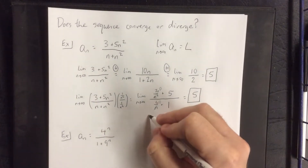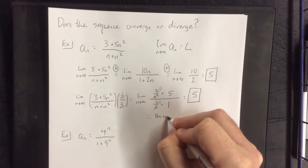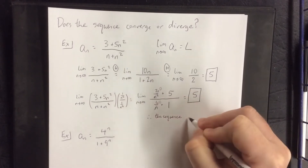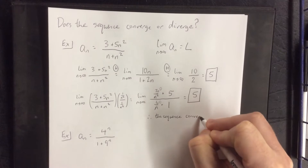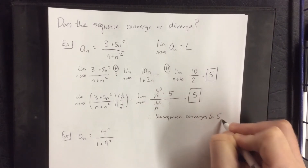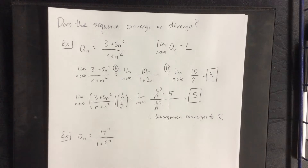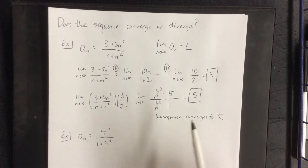So what we can say is the sequence converges to 5. Eventually, once we get out far enough — whether n is a thousand, a million, or a trillion — the sequence will essentially look like 5, 5, 5, 5, and so on.